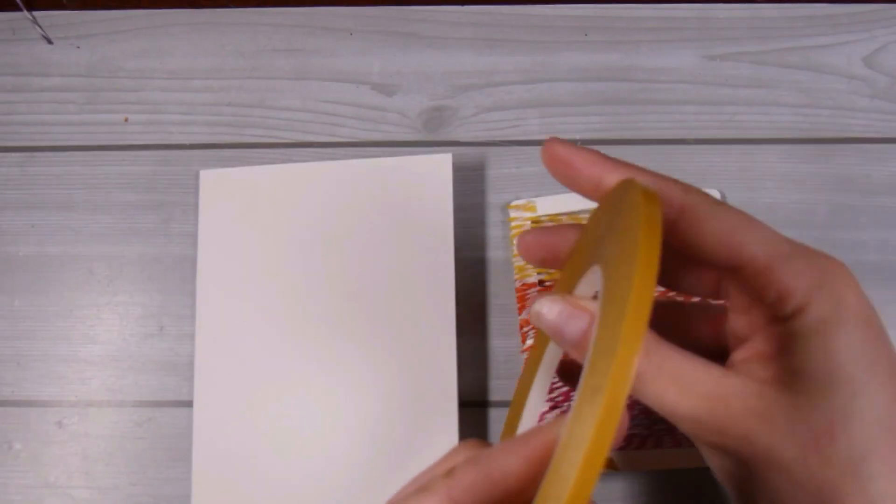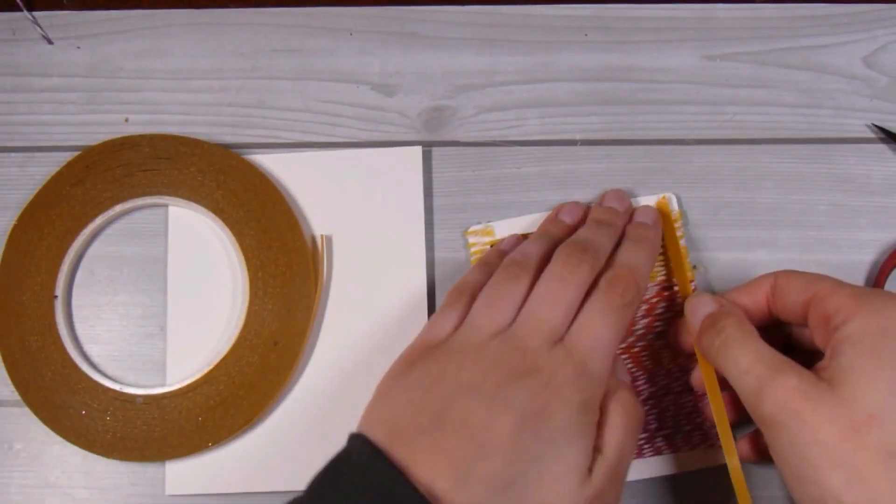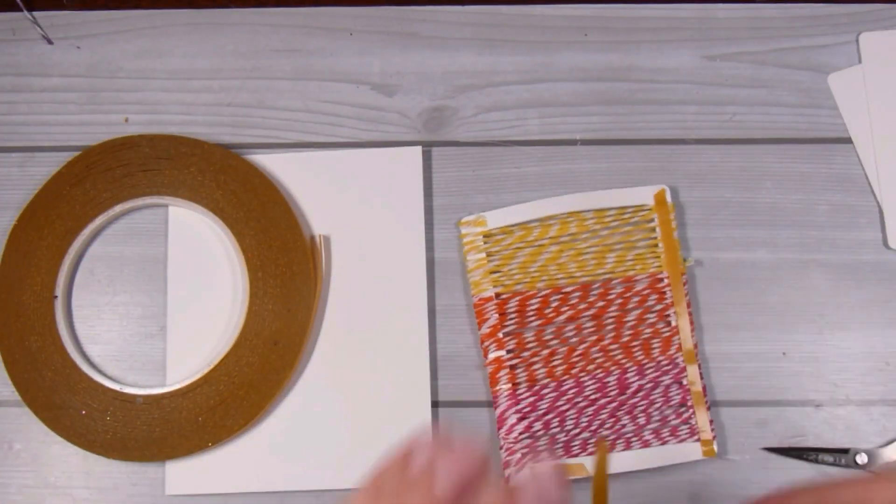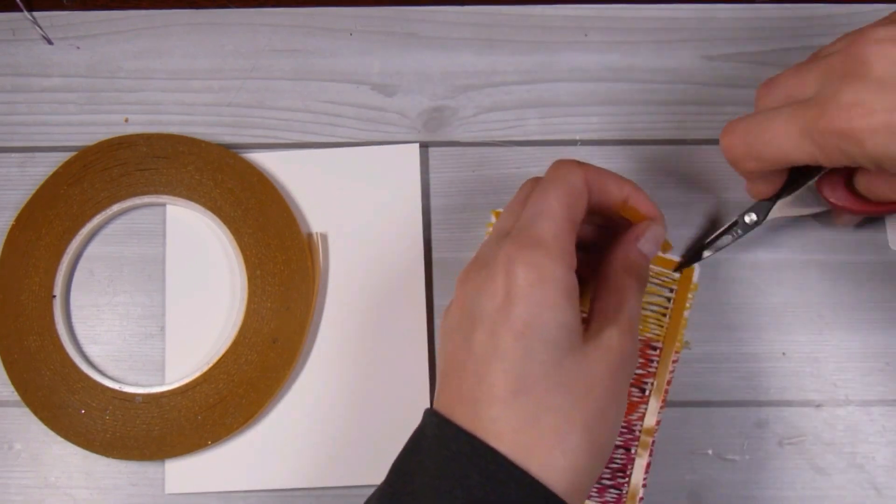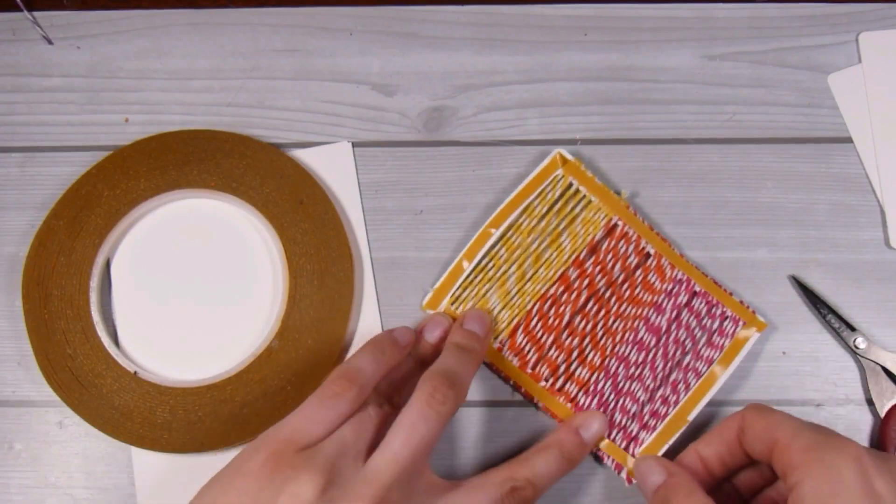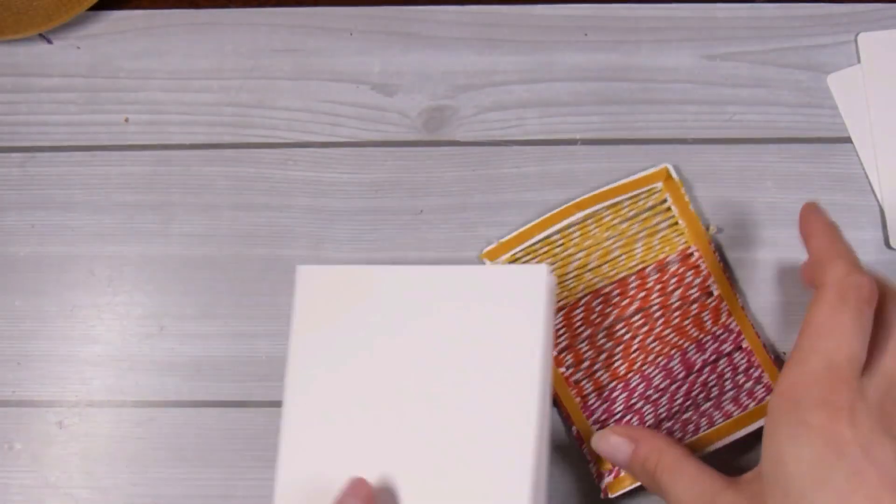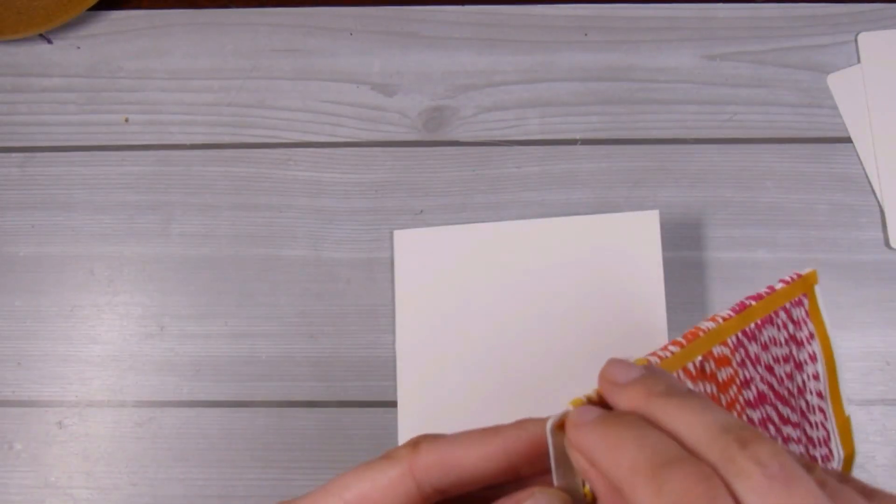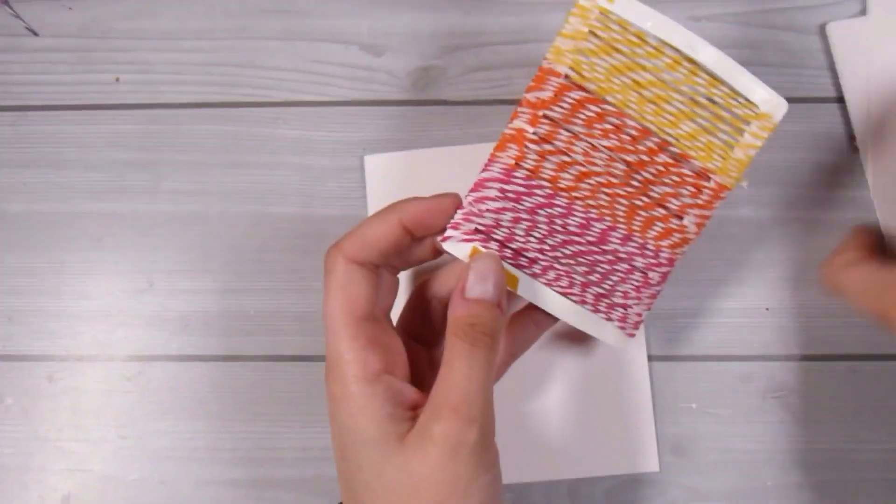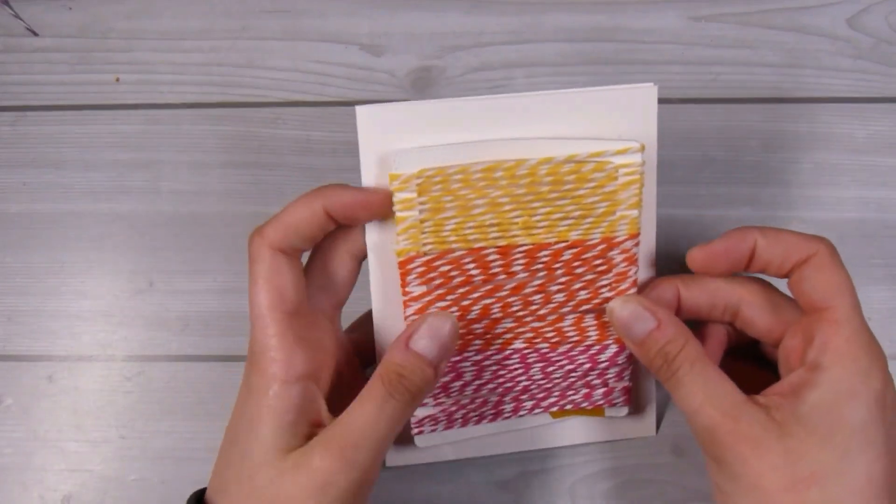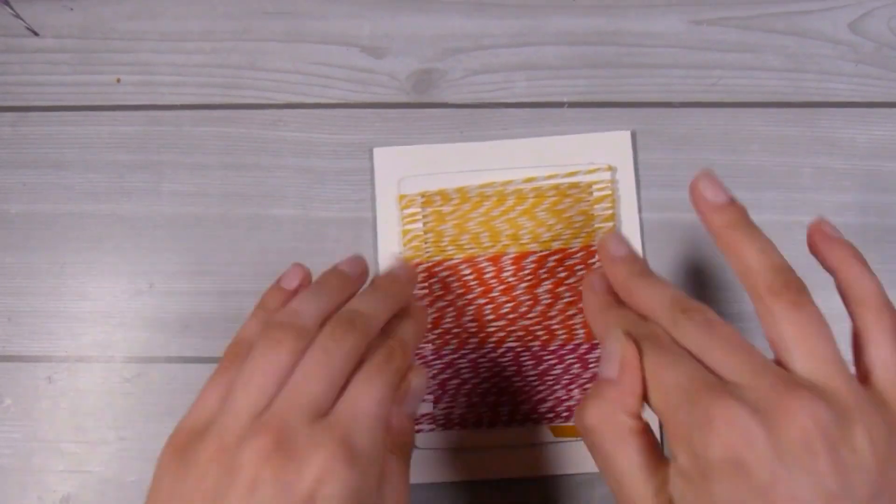That is that part done and now I'm going to adhere it down onto my 110 pound Nina solar white card base. I'm just using the same double-sided adhesive, this is the adhesive from Alena Crafts and it is a very strong double-sided adhesive, so it's a great one to use for a project that you need to know is going to stay put.